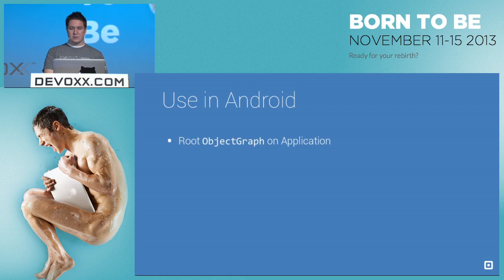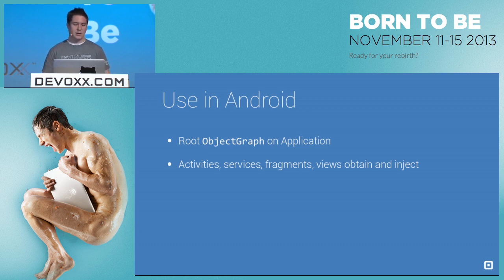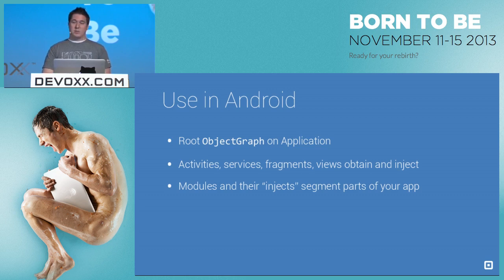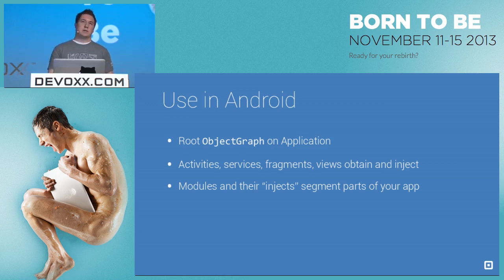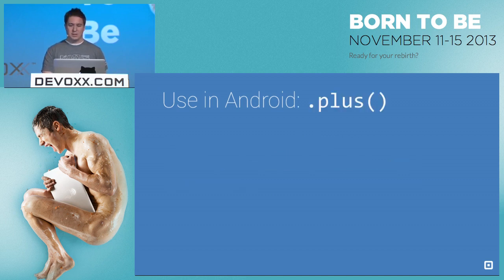That's typically how you use it on Android: put your root object graph on the application object, any object created by Android finds that object graph and injects itself, and we create multiple modules and list injection points. This is a great way to segment different parts of your app — account management, timeline, and logged-out sections are three separate modules each with their own injects list.